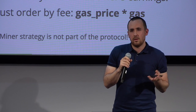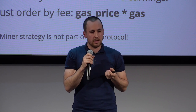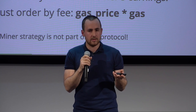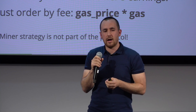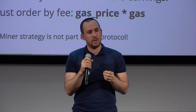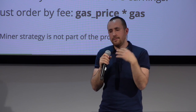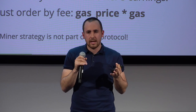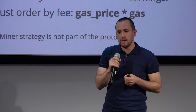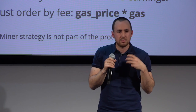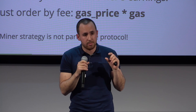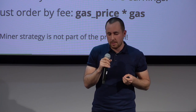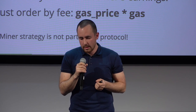A miner might think: I need to keep a queue of all transactions I've seen in the network and order them by the fee I'll receive. The ones paying me the most will be included first. Blocks in Ethereum have a gas limit, so you can't execute more transactions than the current block gas limit allows. This is because the whole network needs to process all blocks — even if you have a supercomputer, some peers may struggle. This is why there's a gas limit per block. So the miner orders transactions by fee.